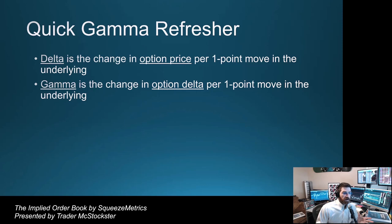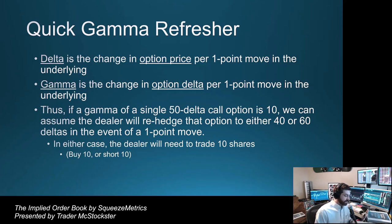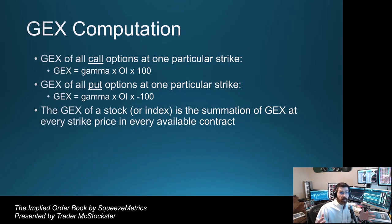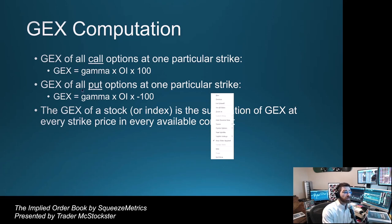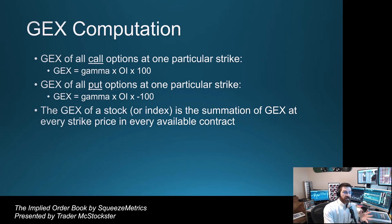A quick gamma refresher: delta is the change in option price per one point move in the underlying, and gamma is the change in the option delta per one point move in the underlying. If the gamma of a single 50 delta call option is 10, we can assume the dealer will re-hedge that option to either 40 or 60 deltas in the event of a one point move — buying 10 or shorting 10 shares. For call options, the GECS of all call options at one particular strike is gamma times open interest times 100. For put options, it's gamma times open interest times negative 100. The GECS of the whole index is the summation of every strike price in every available contract.